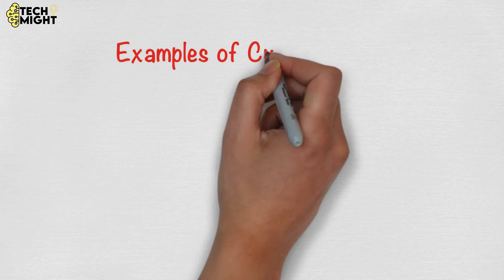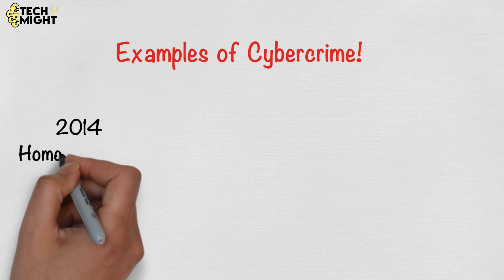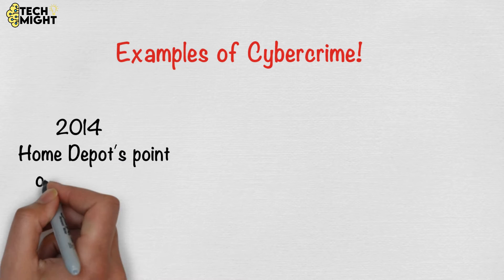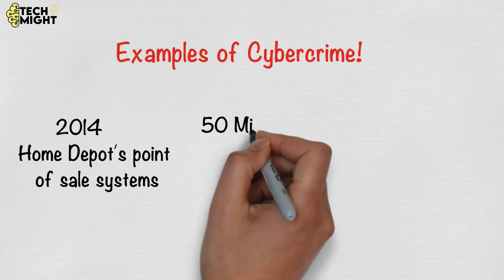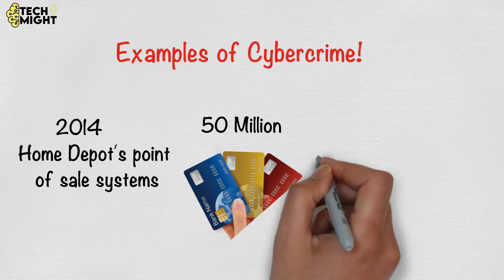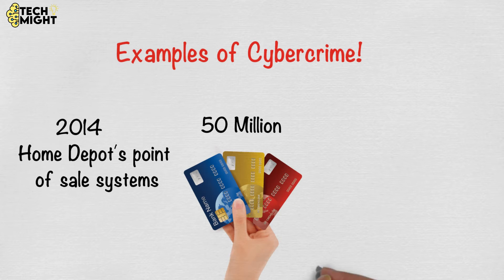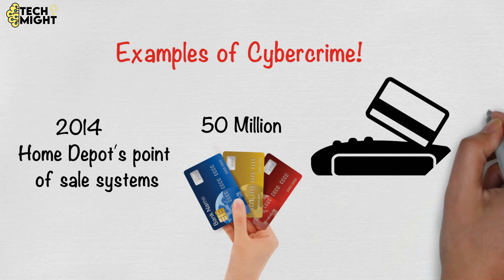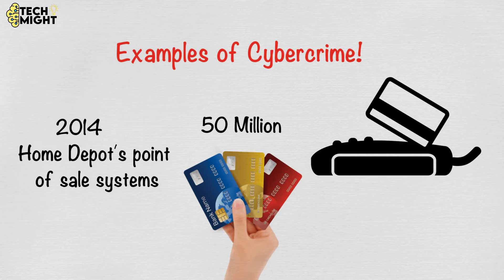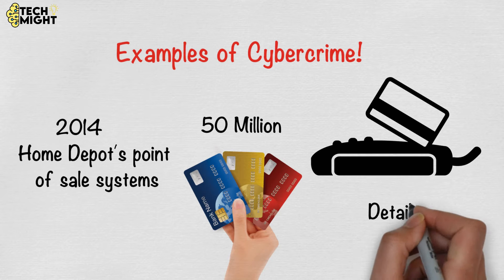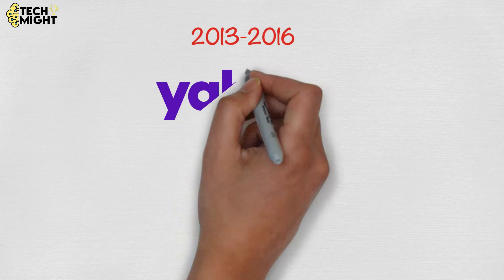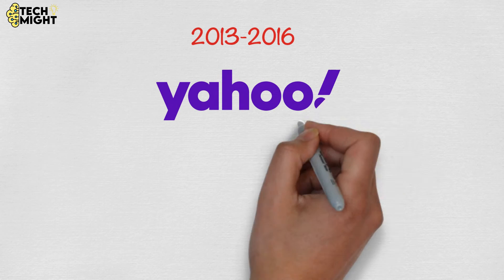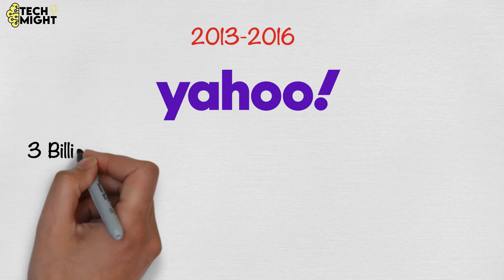Here are a few examples of cybercrime. In 2014, U.S. retailer Home Depot's point-of-sale systems were breached. Attackers stole 50 million personal credit cards, and for some time any credit card swiped at Home Depot stores was captured and its details compromised by the attackers.